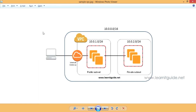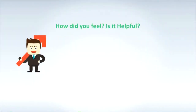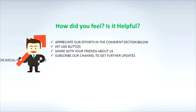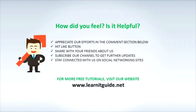So, exactly as shown in the diagram, we have created our VPC, subnets, internet gateway, and route tables. Hope you got an idea — keep practicing and have fun. If this was helpful, appreciate our efforts in the comment section below, hit the like button, and share with your friends. Subscribe to our channel for further updates and visit our website at www.lanetguide.net for more free tutorials.